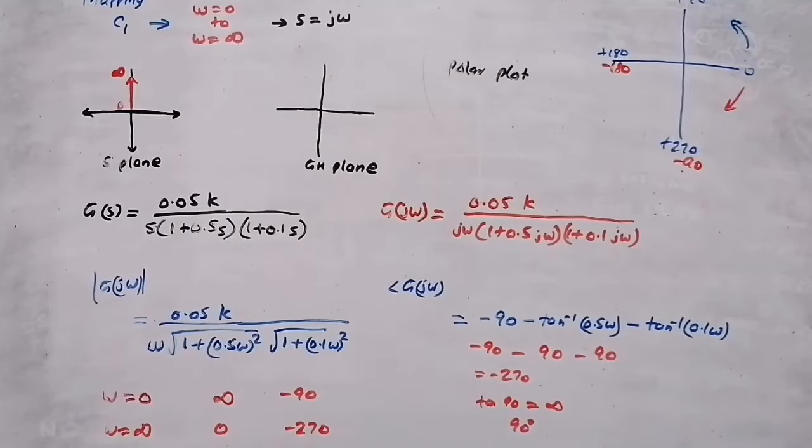The third region C3 is from -∞ to 0, which is the reverse of C1. We substitute s = jω. Since C1 goes from 0 to +∞, C3 is its mirror image. If the C1 plot moves in one direction, the C3 plot is the mirror image moving in the opposite direction. So this is the corresponding plot in the GH plane for region C3.